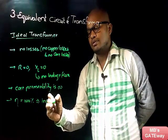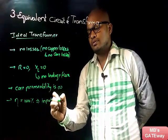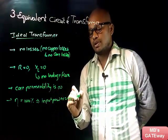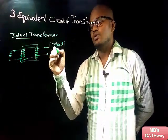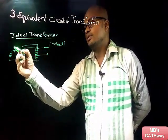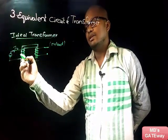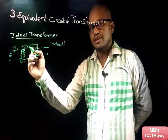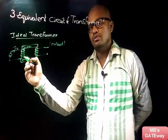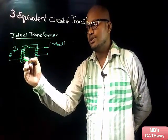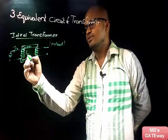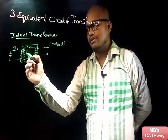Input power is equal to output power. Let us consider the no-load case. If an input supply is given, the current flowing in the primary winding is I₀. Since this flux is of alternating nature, according to Faraday's law of electromagnetic induction, an EMF is induced in the primary winding, represented as E1.